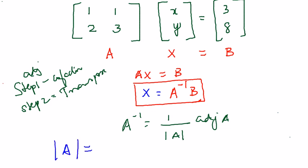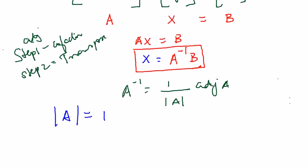So let us do that first. Mod A is nothing but this into this minus this into this. So 1 into 3 minus 1 into 2, 3 minus 2 is 1. So since it is not 0, we can proceed to find the adjoint.